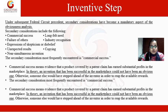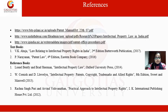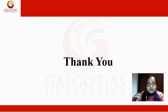Under subsequent federal precedents, secondary considerations have been made mandatory in the obviousness analysis. Secondary considerations include commercial success, failure of others, and near-simultaneous inventions. The secondary consideration most frequently encountered is commercial success. An invention that has been successful in the marketplace could indicate it was not an obvious one. References and textbooks for further reading can be found on Spicy IP or SEC Online.